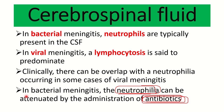To summarize: in bacterial meningitis, neutrophils increase; in viral meningitis, lymphocytes increase. To prevent attenuation of neutrophilia, we should collect the cerebrospinal fluid before giving antibiotics. This is a very important point.